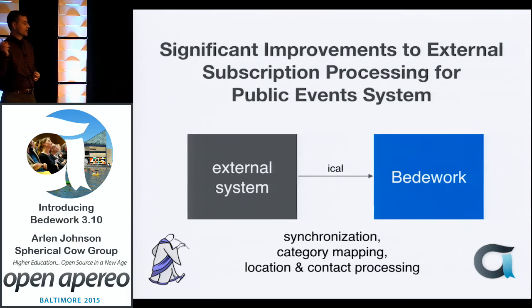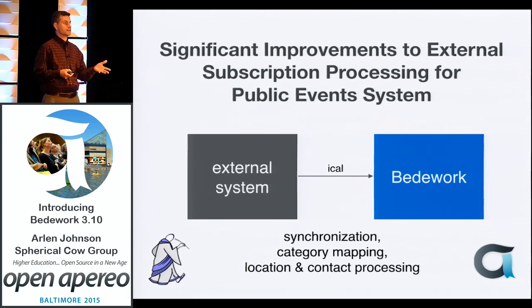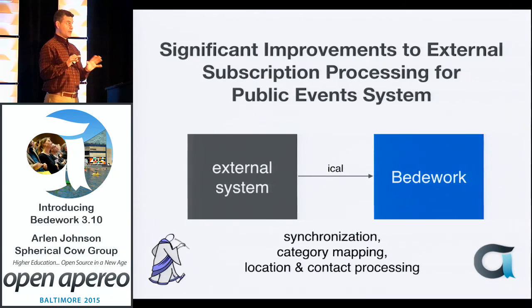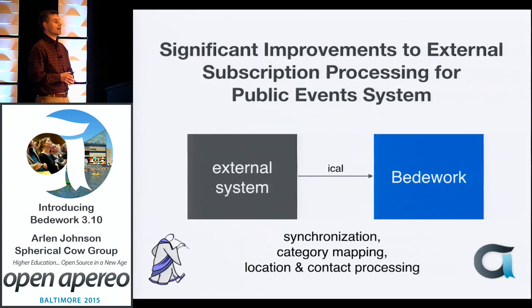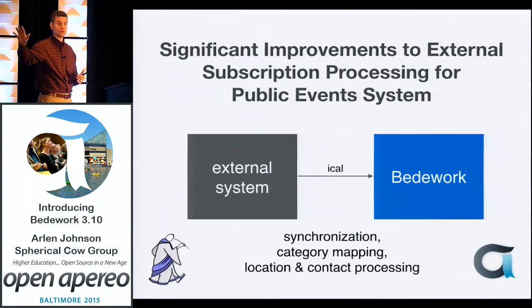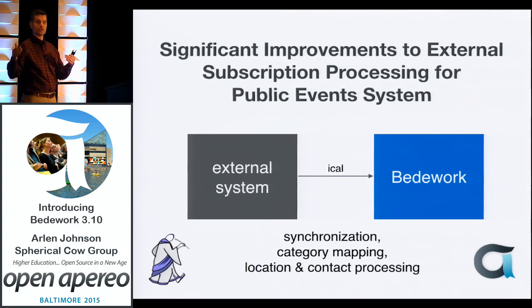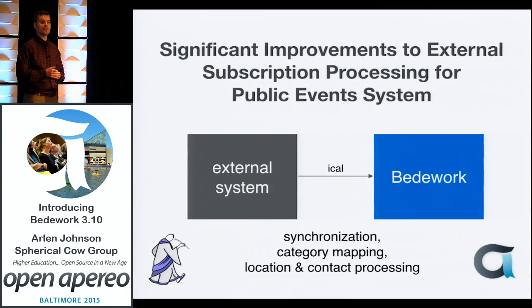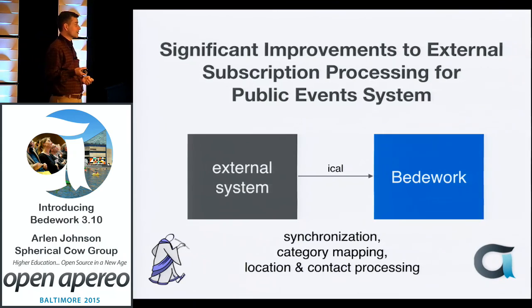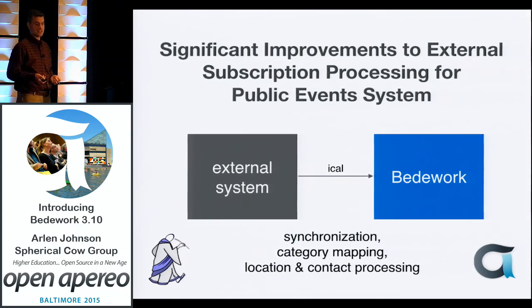We've had significant improvements to external subscriptions in the public events world. It's very common, especially at academic institutions, to have one public events system and an athletics website that produces its own events. The athletics department would like their events within your system. We wanted a much better mechanism for synchronization between those data feeds. We're doing a better job of this now with stronger category mapping, allowing for better filtering, and potentially location and contact processing along the way.